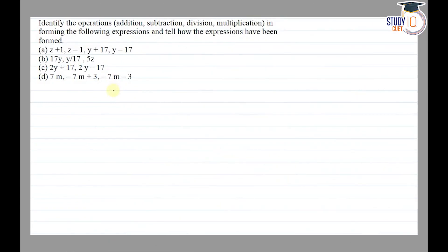Hello everyone. This question appears in Class 6 NCERT chapter of Algebra. This is the third question of Exercise 11.3. The question says: identify the operations — addition, subtraction, division, multiplication — in forming the following expressions and tell how the expressions have been formed.